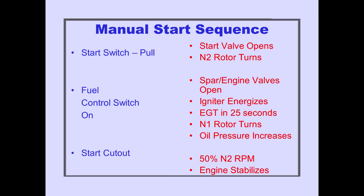This summarizes the manual start sequence. Pulling the start switch out opens the start valve and the N2 rotor begins turning. When N2 RPM increases past the fuel on command indicator, positioning the fuel control switch to run opens the spar and engine valves and energizes the igniter. EGT increases within 25 seconds. The N1 rotor begins turning, oil pressure increases, and starter cutout occurs automatically at 50% N2 RPM. The engine stabilizes at idle.